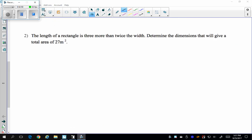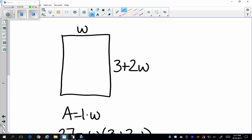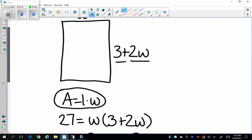Looking at this next problem, the length of a rectangle is three more than twice the width. So I want to determine the dimensions that will give me a total area of 27 square meters. So I'm looking at my initial rectangle. I know that my width is just equal to w. And then my length is actually equal to two times the width plus three. Now I want to look at the area. So I'm going to use my area formula which is a equals l times w, length times width. And I'm just going to substitute in my length and my width.